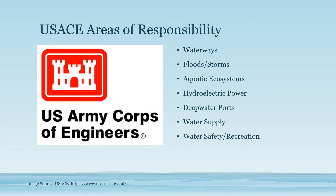USACE is also responsible for hydroelectric power — the Corps operates 75 hydro plants, producing about 25% of U.S. hydroelectric power capacity, or about 3% of total electric energy in the United States. They handle deep water port maintenance including dredging, making ports deeper so that ships can pass through. For water supply, the Corps has reservoirs that supply water to 115 U.S. cities, and that water is also sometimes used for agriculture. They're also in charge of water safety and recreation, such as maintaining federal beaches and promoting life jacket use.